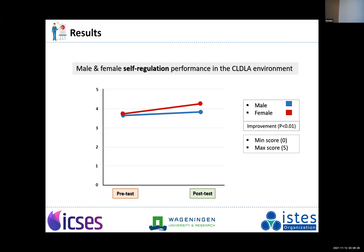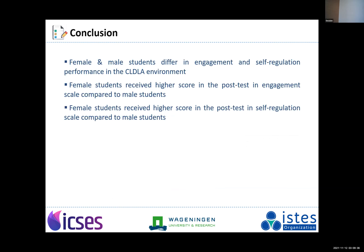When it comes to self-regulation, the same pattern was true. Again, the starting point was about 3.5 for both male and female students, but you can see the growth in self-regulation activities of female students was much higher than males. This tells us that when using this constructivist learning analytic design, female and male students perform differently, especially in online settings.